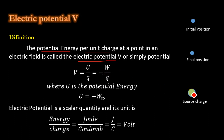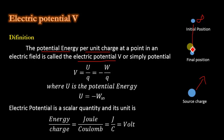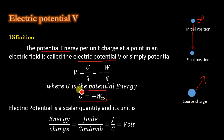For example, this is a source charge — because of this charge there is an electric field — and this is a test charge. The test charge is initially at infinity. When we move this test charge from the initial position to the final position, we do work against the electric field of this source charge, and that work done is stored in this charge as potential energy, where U equals minus W-infinity. The infinity means that the initial position or reference point is from infinity.